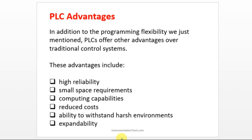Why are we using PLC? It offers more advantages over traditional control systems, especially relay control systems. It has high reliability compared to previous control systems, and the space requirement is very small. Troubleshooting a relay system is very tough, but in PLC you can troubleshoot within 10 minutes. It can withstand harsh environments — high temperature and humidity. And expandability: according to your application, you can increase or decrease the number of IOs.